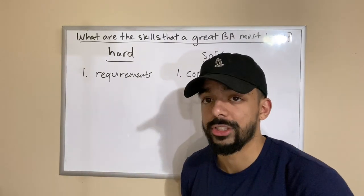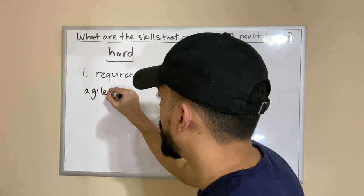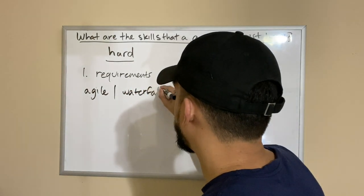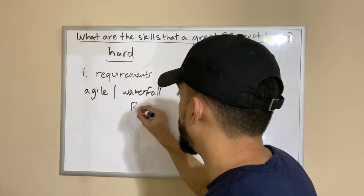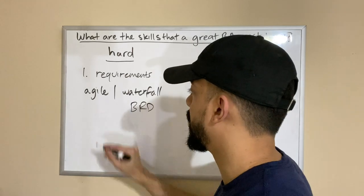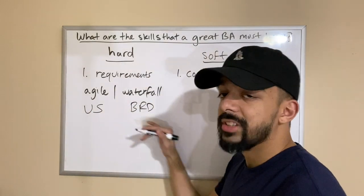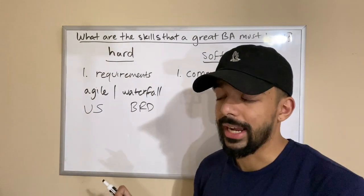This is something where obviously you will have to learn and it differs with methodologies. If you're going with an agile methodology versus a waterfall, you're going to have a different format for requirements. You're going to have to do a business requirements document here versus a user story.